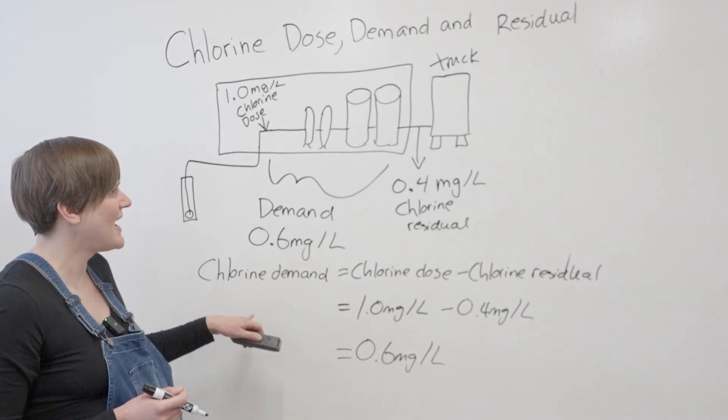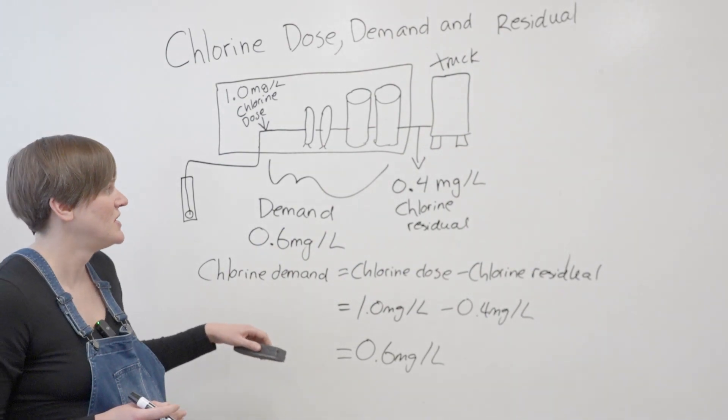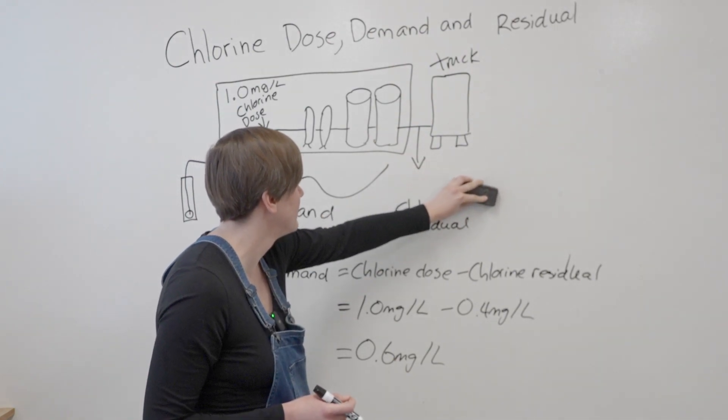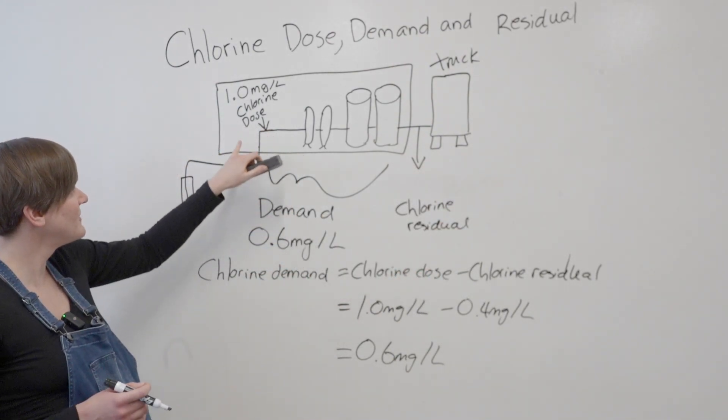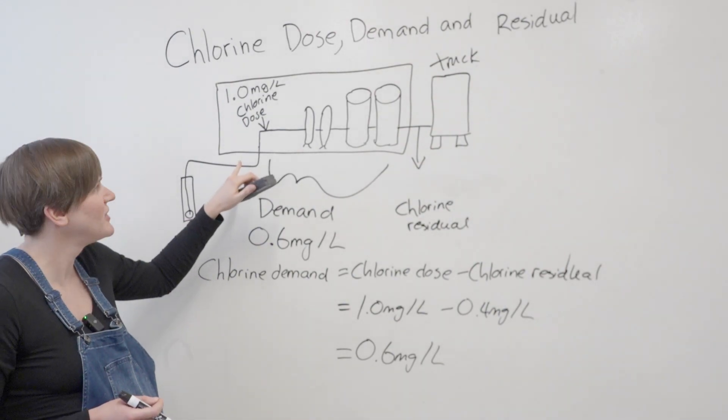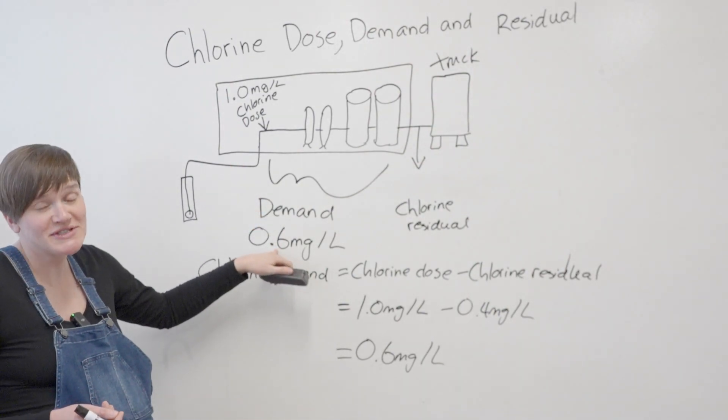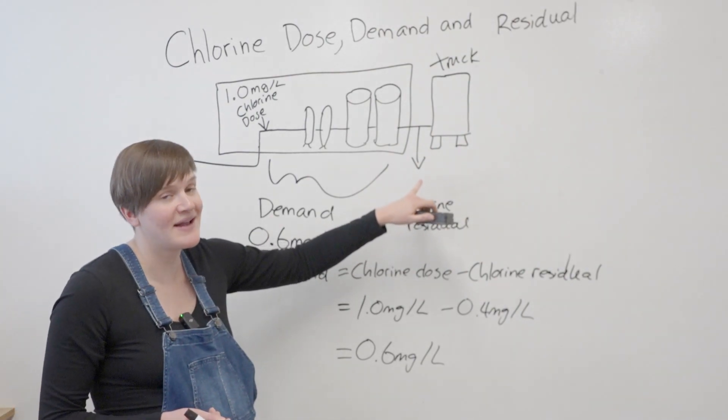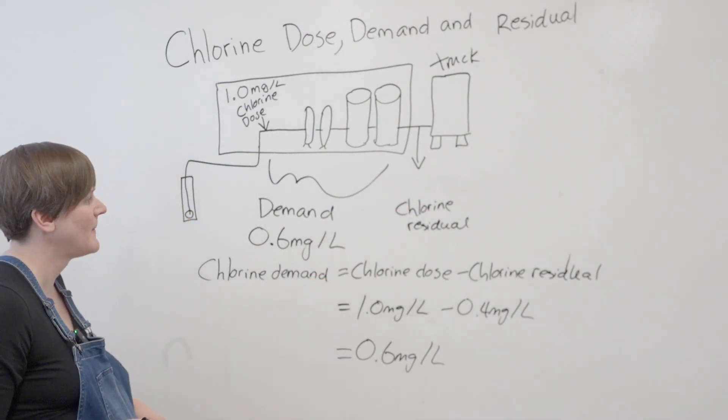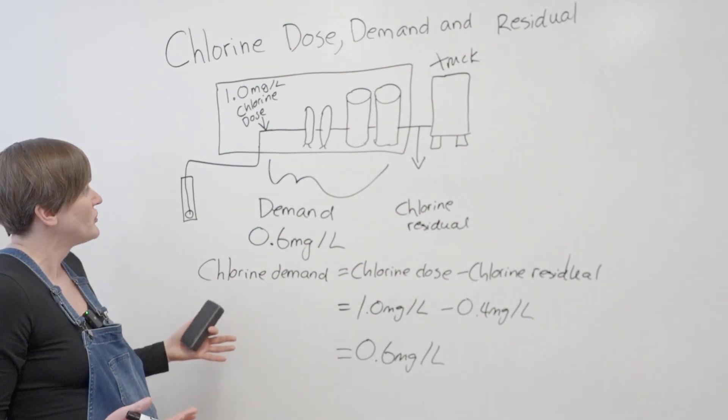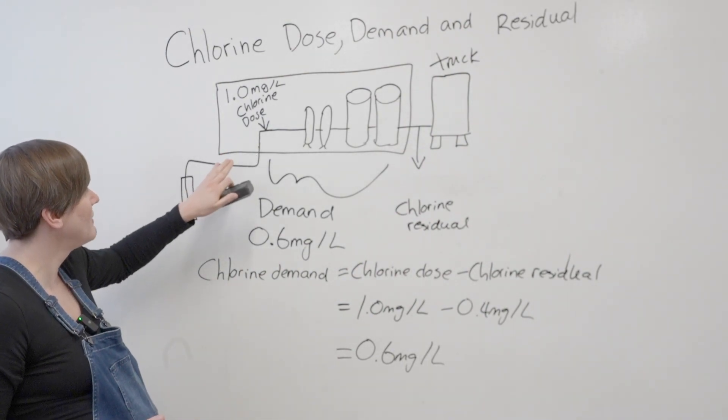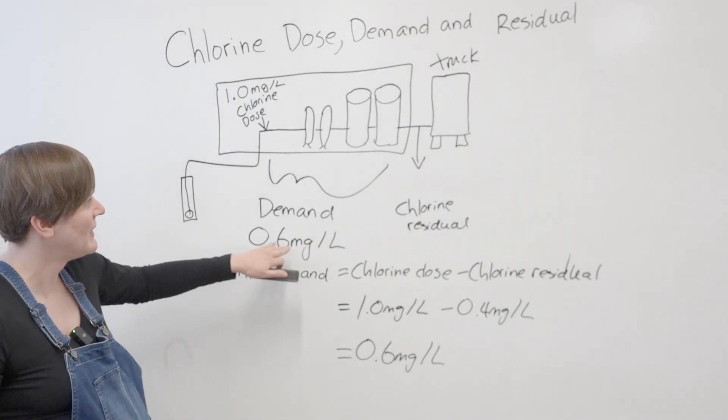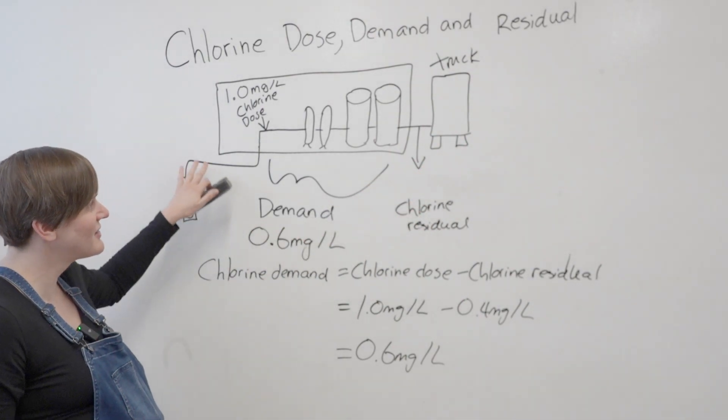I'm going to show you now how you would calculate residual. So say you didn't know what this was - you just got a problem that says you're dosing at 1.0 milligrams per liter, you know your system demand is 0.6 milligrams per liter, and it's asking you what is the residual. So we know we're starting with 1.0, 0.6 is being taken away, and what are we going to be left with? That's why I like the visual a lot.